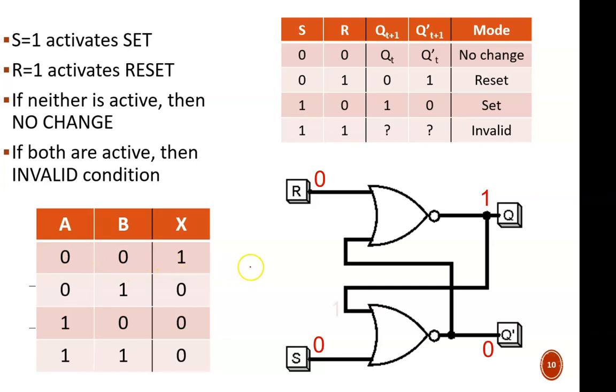This bottom NOR gate has inputs of one and zero, therefore its output is zero. That matches the current Q' value. This top NOR gate has inputs of zero and zero, therefore its output is one. That matches the current Q value. So the outputs hold constant as long as none of the inputs change.